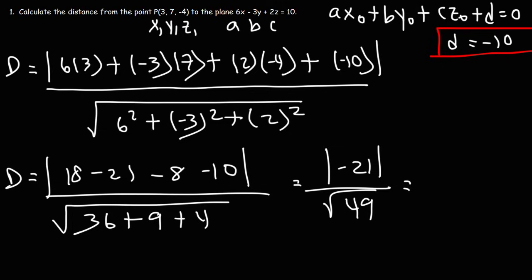The absolute value of negative 21 is positive 21, and the square root of 49 is 7. So the answer is 3.